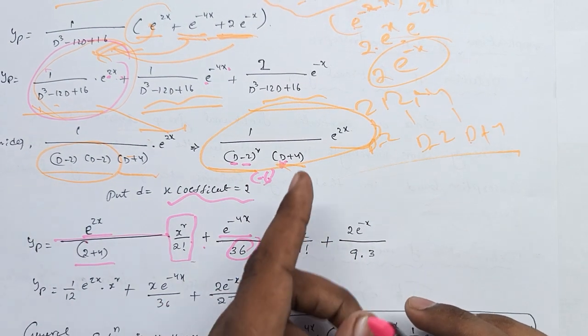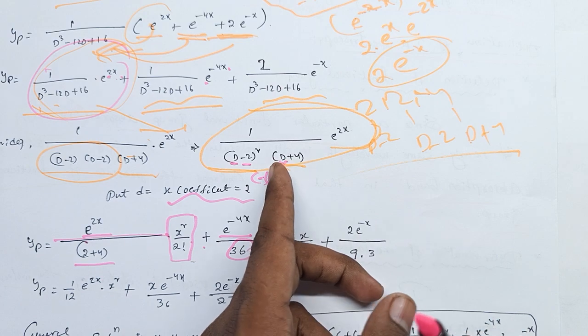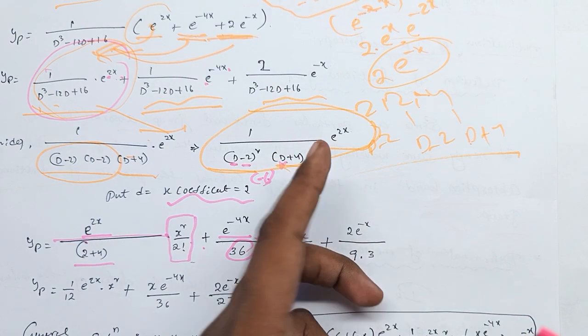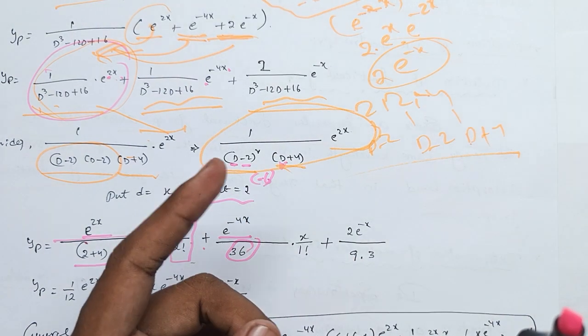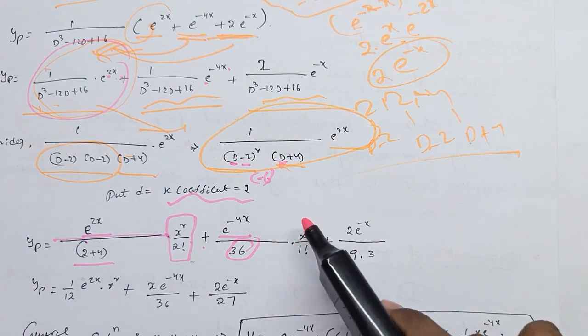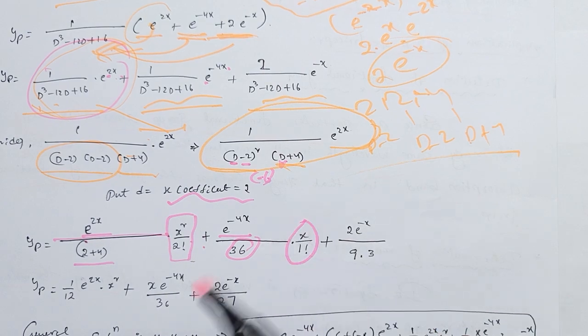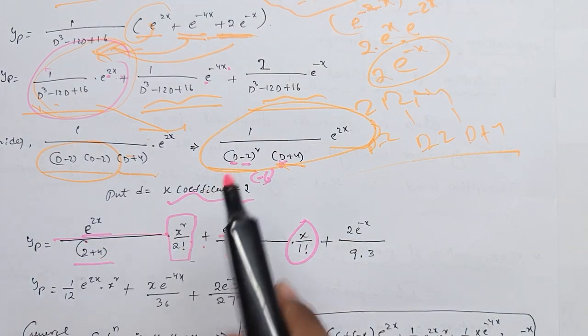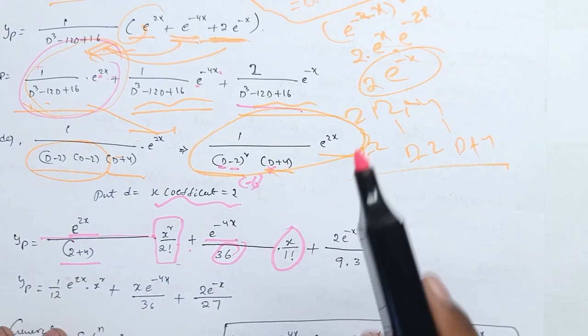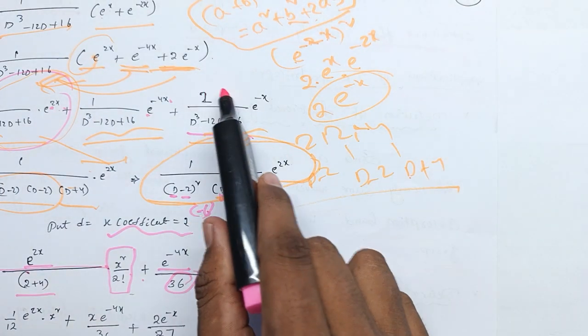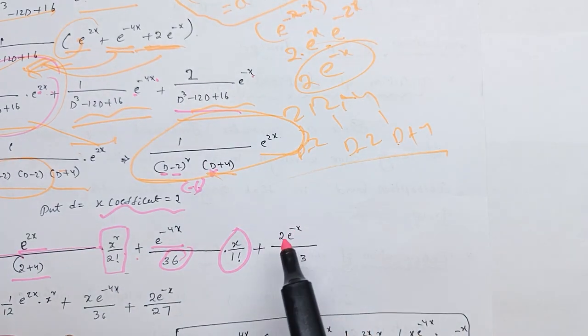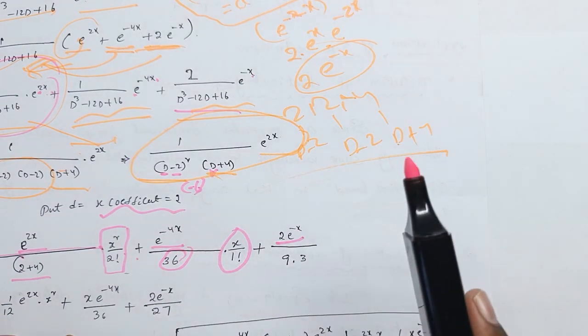Next term: minus 4 plus 4 equals 0. Next term: 2 into e^(−6) side.